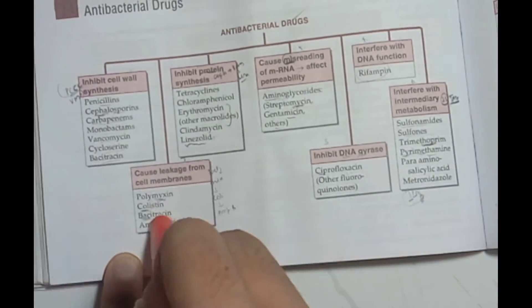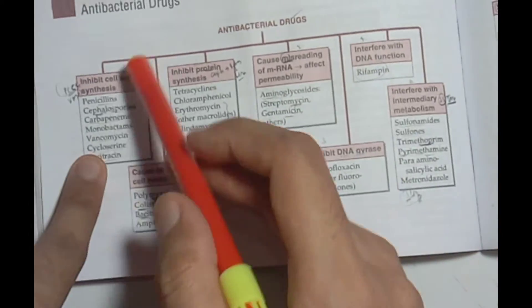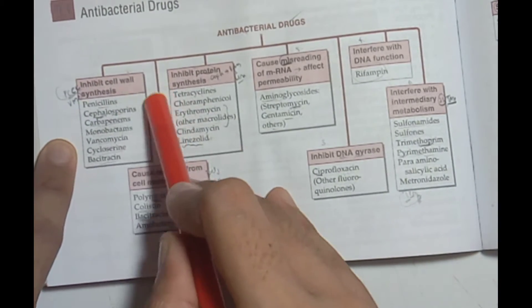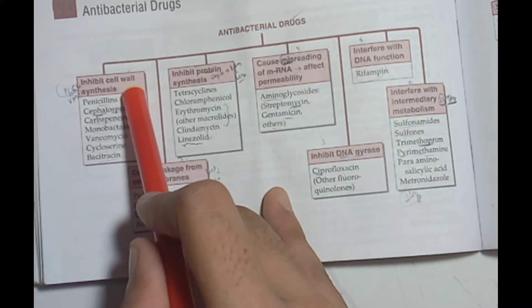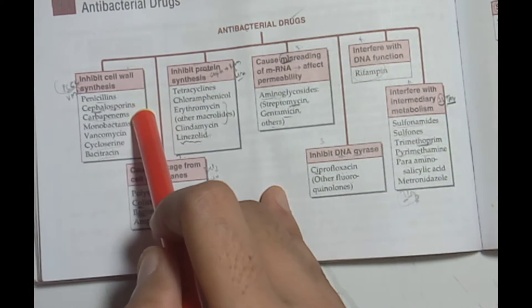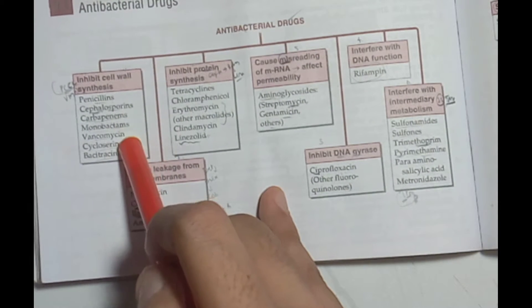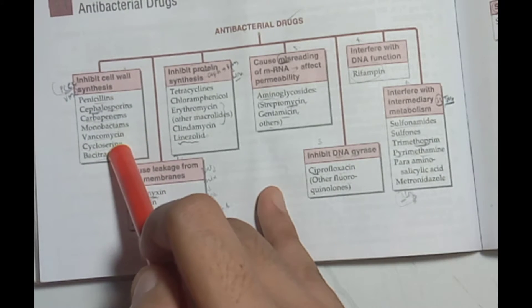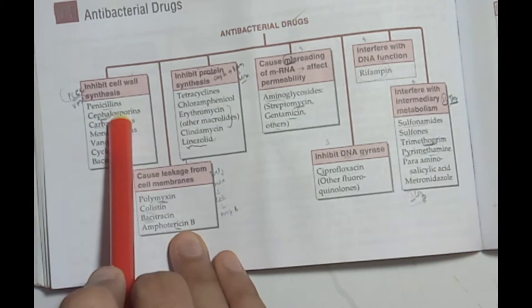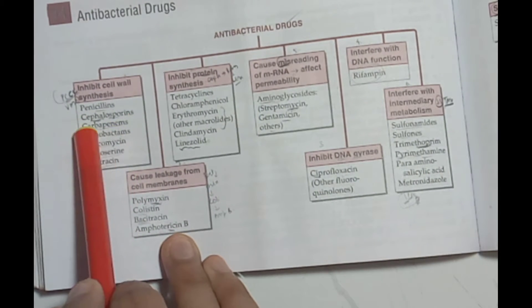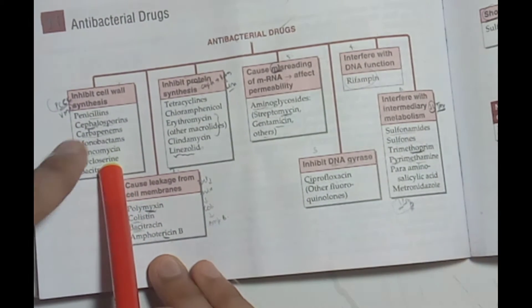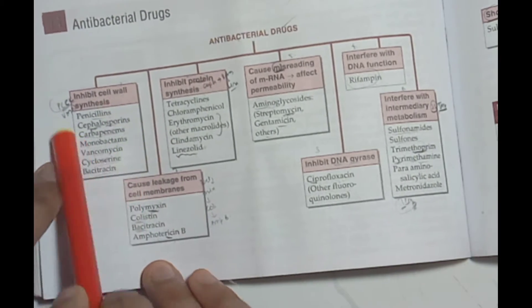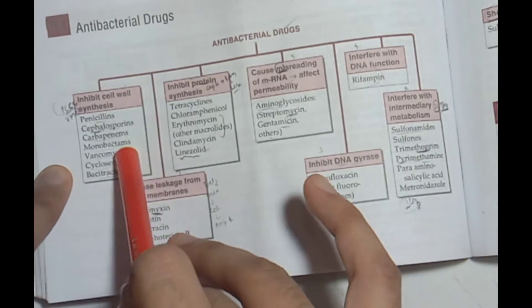For cell wall synthesis inhibitors, we have PCC-VMB. P is Penicillin, Cephalosporin, Carbapenem, and Cycloserin. VMB is Vancomycin, Monobactam, and Bacitracin. PCC-VMB: Penicillin, Cephalosporin, Carbapenem, Cycloserin, Vancomycin, Monobactam, and Bacitracin.